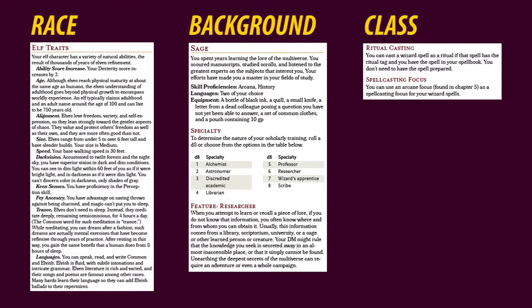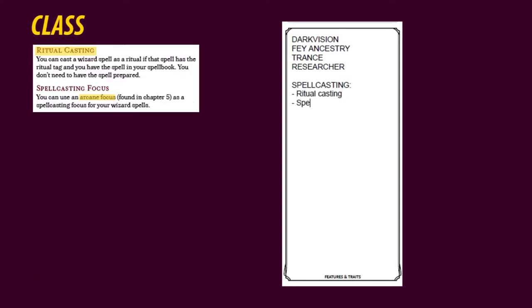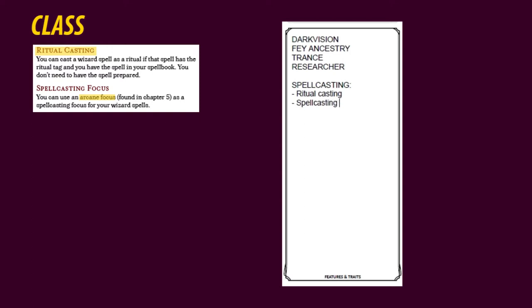Let's jump over to features and traits, as it is a good time to take care of it now. You find and bring over your features and traits from your race, background, and class. The features and traits my character gets are darkvision, fey ancestry, and trance from his race and subrace, and Researcher from his background. As a spellcaster, I need to be on the lookout for things like ritual casting and spellcasting focus.